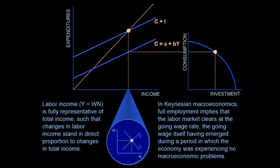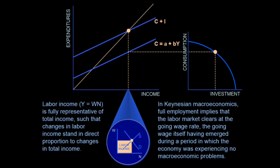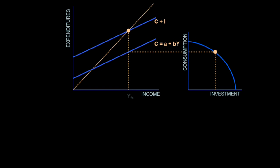Labor income is represented by Y = W times N. W is the wage rate; N means number of worker hours. That's just that little rectangular patch — the income of labor. But Keynes says that's a proxy for all income as long as the ratio between labor and land and capital don't change. If they don't change, then we can just measure income by labor income and multiply it by some factor if you know what that factor is.